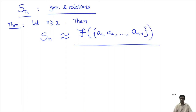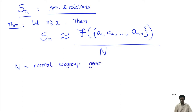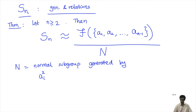This is modulo the normal subgroup N generated by the following relations. The first set of elements is ai squared, for i between 1 and n. This is analogous to the a-squared and b-squared relations we had in the case of S3.